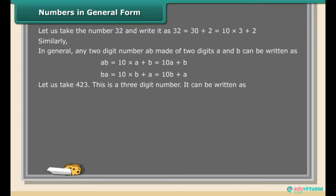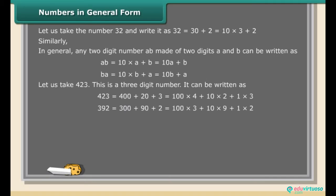The number 423 can be written as: 423 = 400 + 20 + 3 = 100 × 4 + 10 × 2 + 1 × 3. Similarly, 392 = 300 + 90 + 2 = 100 × 3 + 10 × 9 + 1 × 2.